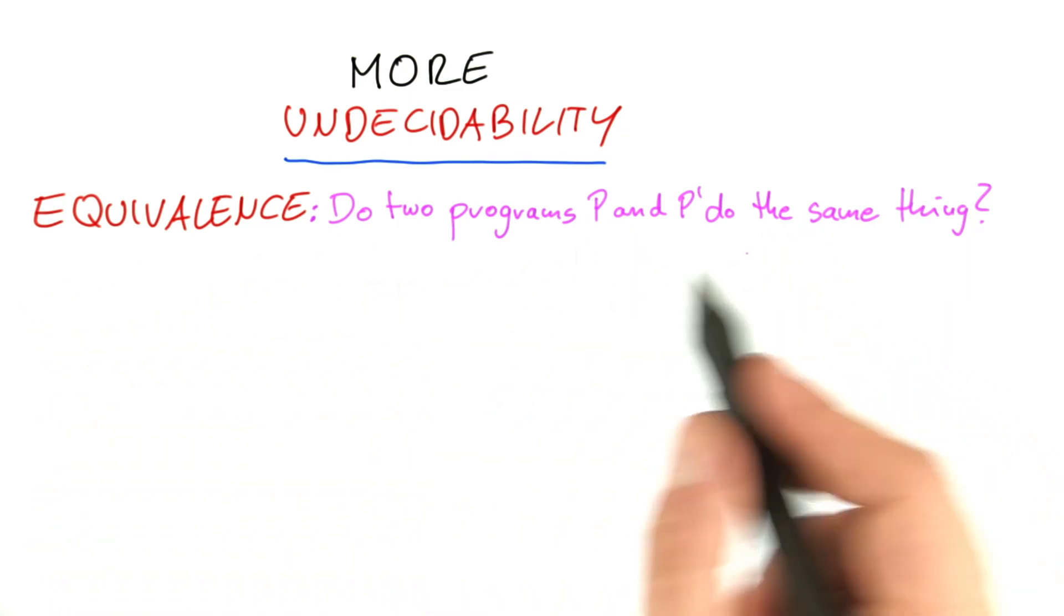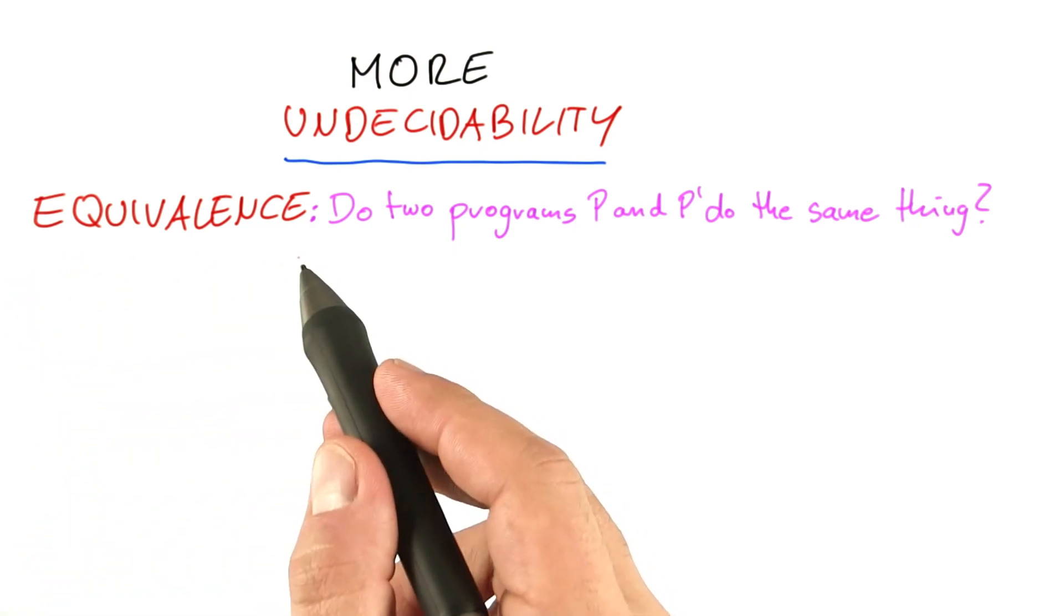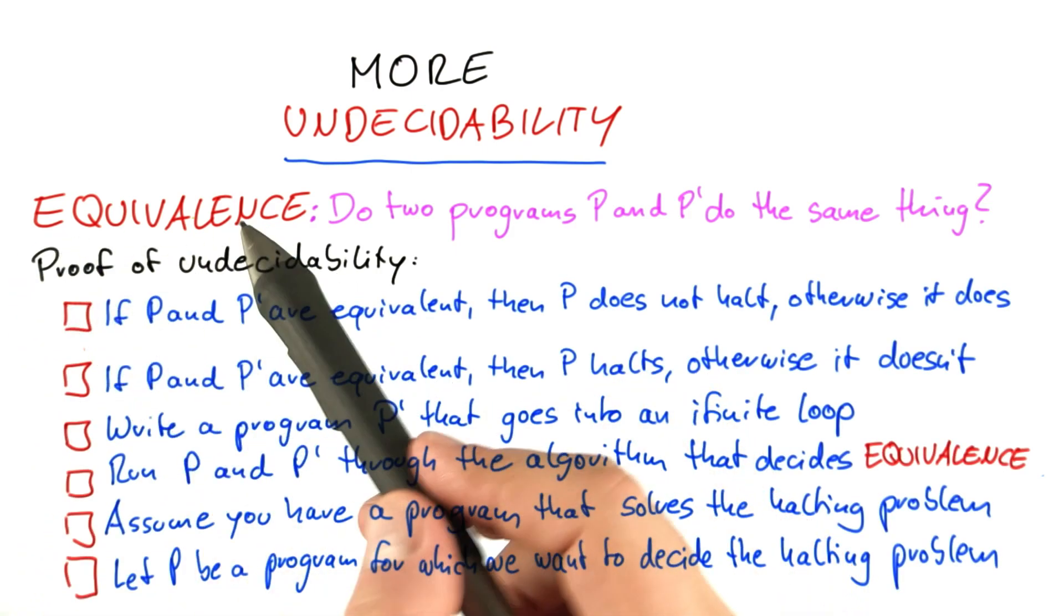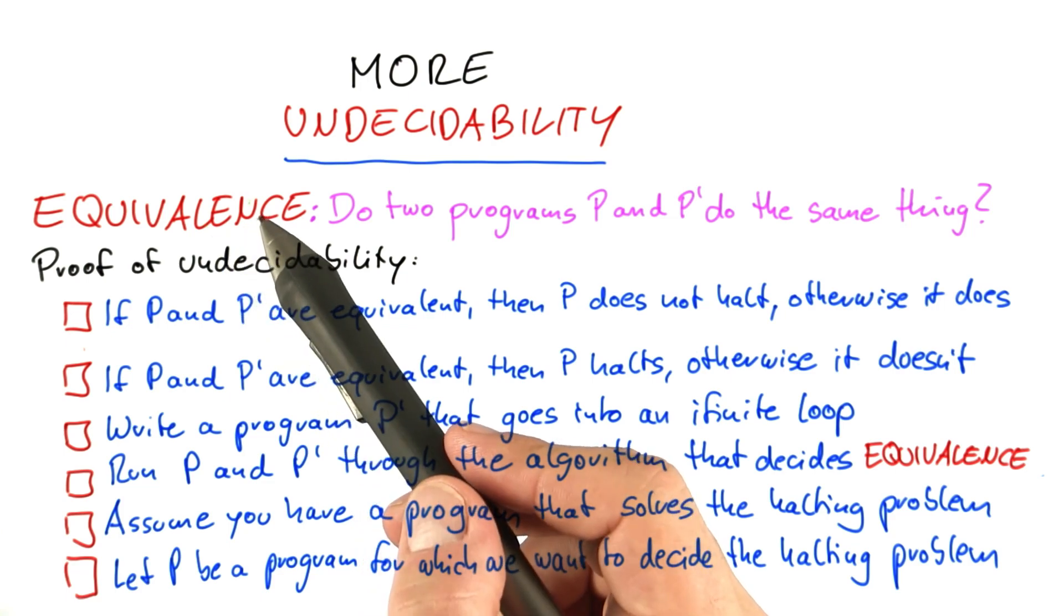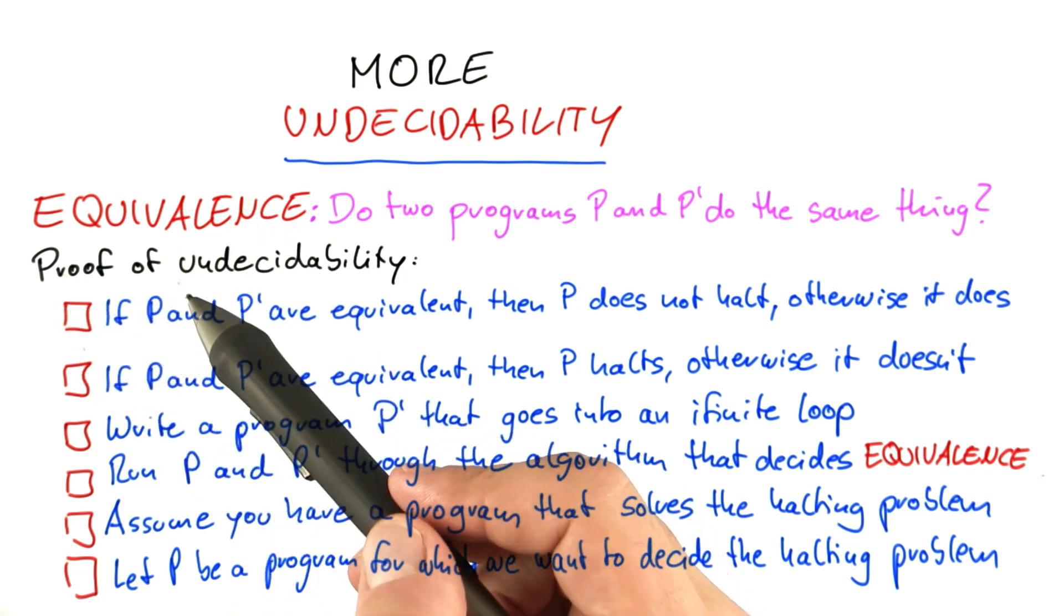And now what I would like you to do is prove that equivalence is undecidable by showing that if you had an algorithm that would solve equivalence, then you could also solve the halting problem.